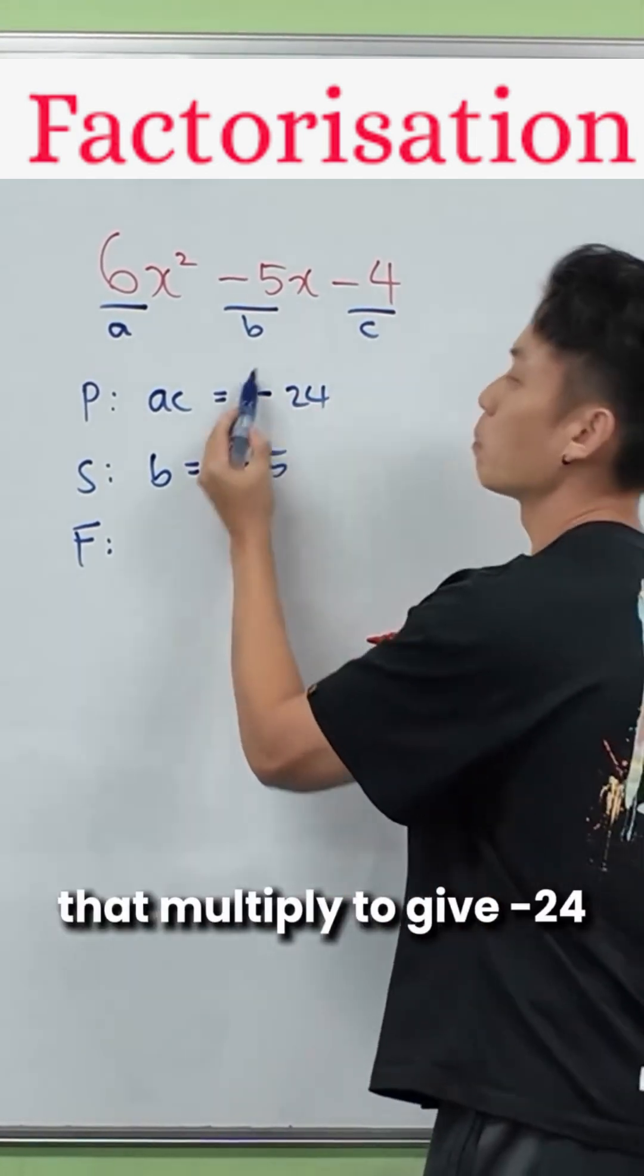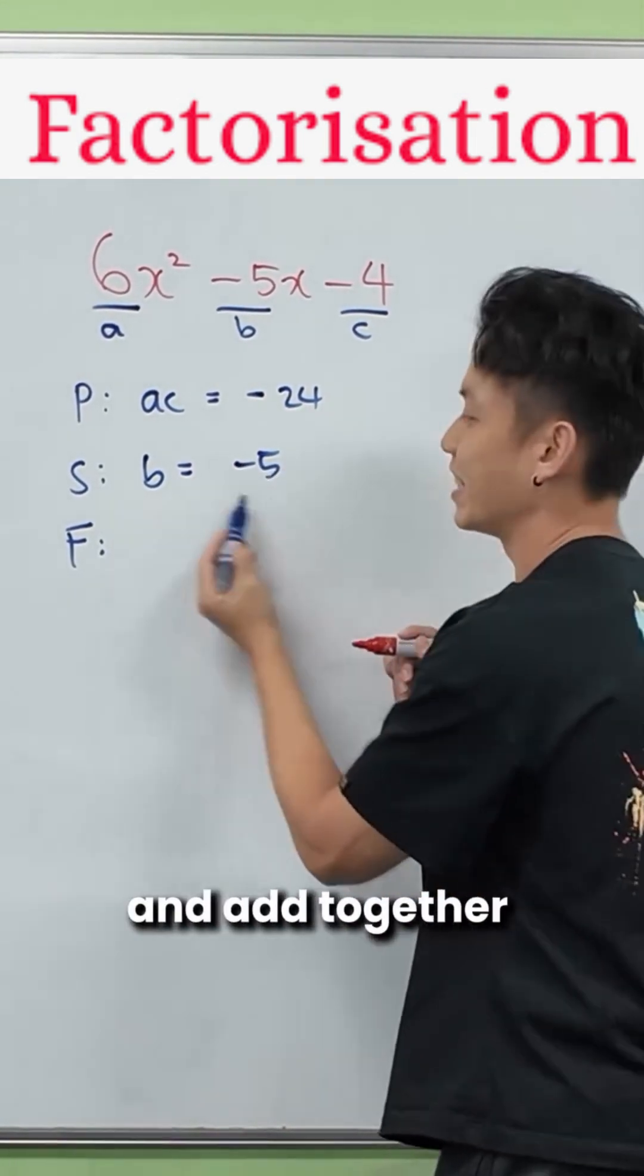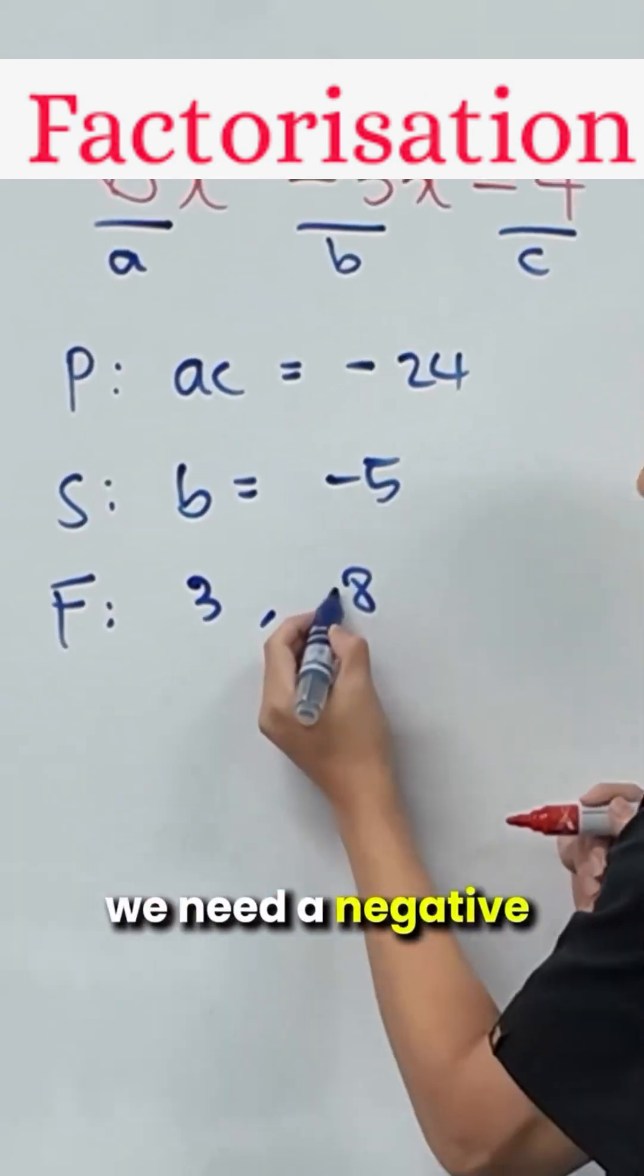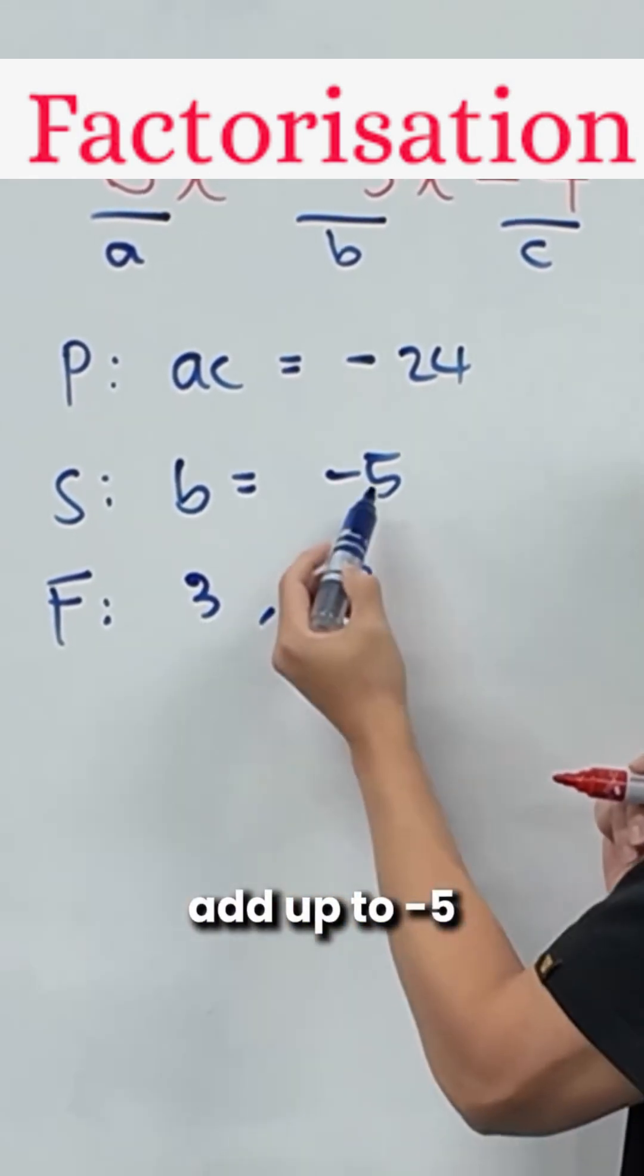So what we want is two numbers that multiply to give negative 24 and add together to give negative 5. Now the numbers that come to mind are 8 and 3, but of course we need a negative in front of the 8 so that they can add up to negative 5.